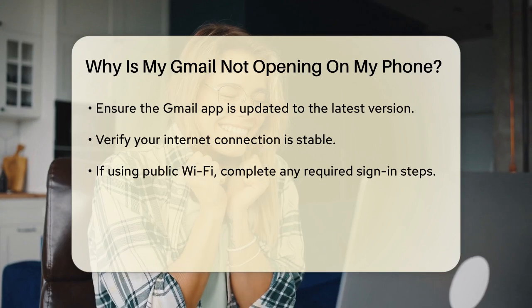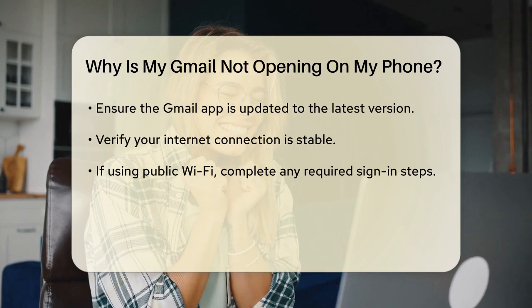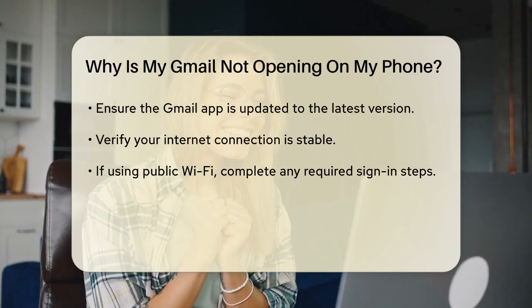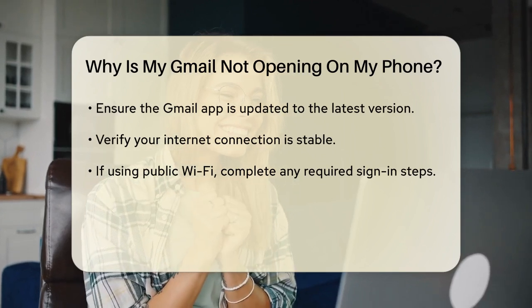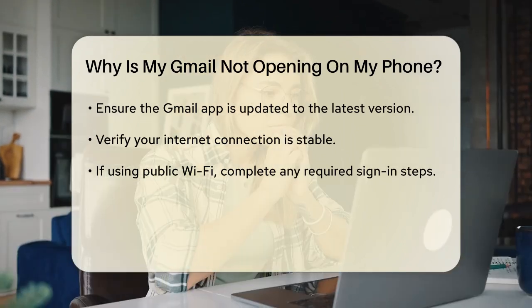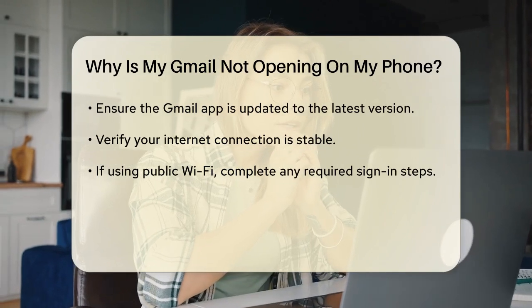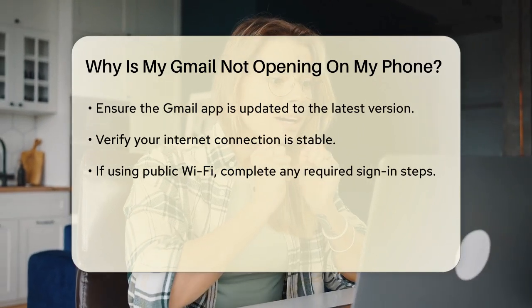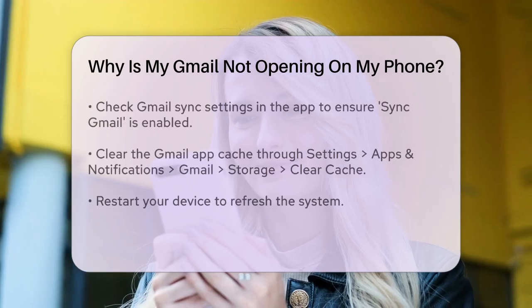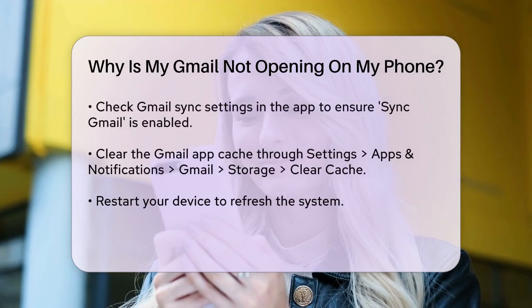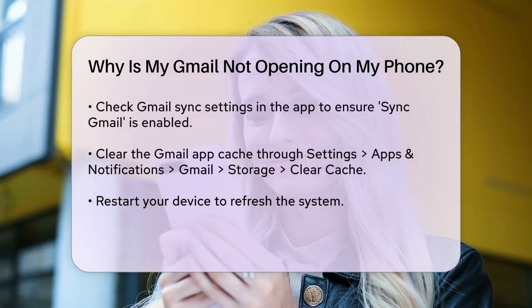Check your Gmail sync settings. Open the Gmail app, tap the menu icon — three horizontal lines — go to Settings, select your account, and ensure the Sync Gmail option is checked.